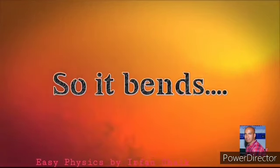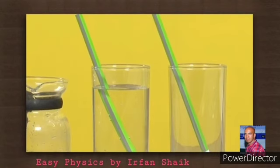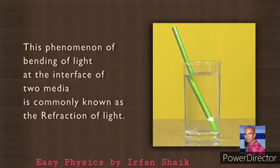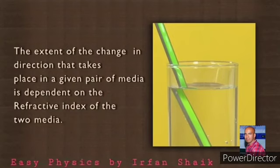Let us take a few examples to understand this. The pencil looks like it is bending because the speed of light in air and water is different. That's why it bends. This phenomenon of bending of light at the interface of two media is commonly known as the refraction of light.